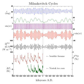Increased tilt increases the amplitude of the seasonal cycle in insolation, providing more solar radiation in each hemisphere's summer and less in winter. However, these effects are not uniform everywhere on the Earth's surface.